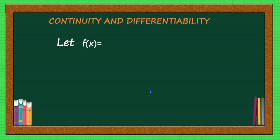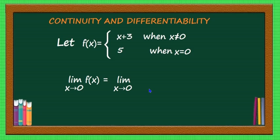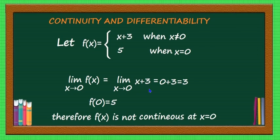Let us take the function f(x) = x+3 when x ≠ 0, and 5 when x = 0. When x is not equal to 0, whether x tends to 0⁺ or 0⁻, f(x) is defined the same way as x+3. So the limit as x tends to 0 of f(x) equals 0+3 = 3. But the value of the function f(0) = 5. The limit and the value of the function are different.